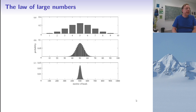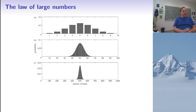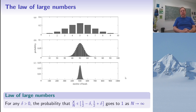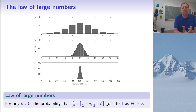The more particles we have, the more this distribution concentrates around the middle, around N/2. Here are plots of the binomial distribution for N = 10, 100, and 1000 — you can see this clearly. This is an expression of the law of large numbers: for any strictly positive δ, the probability of X/N being in the interval (1/2 − δ, 1/2 + δ) goes to 1 as N goes to infinity, so it becomes increasingly likely to be in a small interval around 1/2.